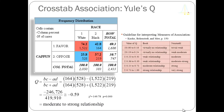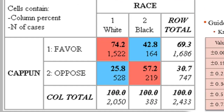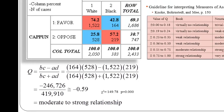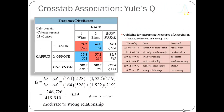We looked at an example before: the relationship between race — whether GSS respondents are white or black — and whether they favor or oppose capital punishment. From this table, 74 percent of white respondents favor capital punishment compared to about 43 percent of black respondents, about a 30 percentage point difference. Calculating Yule's Q using BC minus AD divided by BC plus AD, we get a Yule's Q of minus 0.59. We had a chi-square of 149.78, confirming statistical significance.